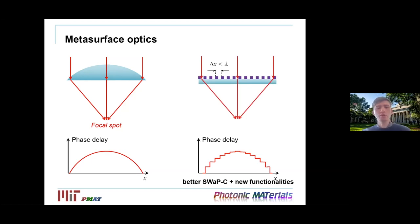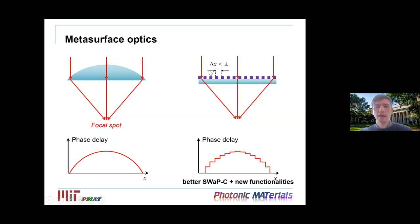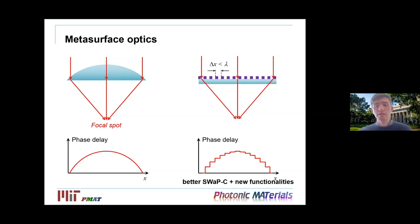One way to advance optical elements with nanotechnology is to introduce nano-optical scatterers that add a certain phase delay to the incident wave. By placing these nano-scatterers on a surface, you can engineer the introduced phase shift. With sub-wavelength features, it is possible to mimic the phase delay of conventional lenses. The key advantage is that these systems are smaller, more compact, and lighter — improving what is called SWaP-C characteristics — and they offer new degrees of freedom to control the wavefront of light.